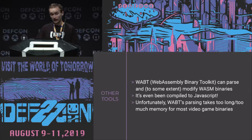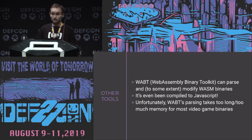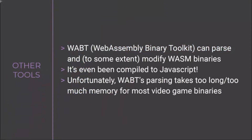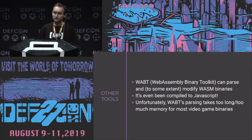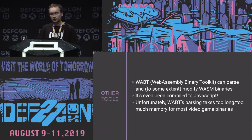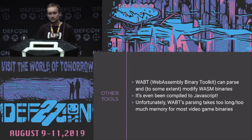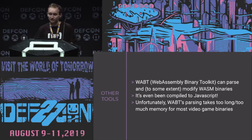The next tool is the WebAssembly Binary Toolkit, or WABT. It's a library specifically for modifying and parsing WebAssembly binaries, and there's even a version compiled to JavaScript, so it seemed like a perfect starting point. The problem is that when you try to use WABT to parse a video game binary, it takes way too long and too much memory. I tried this with a demo Unity 3D binary — basically just hello world of Unity — and WABT would spin its wheels for 10 or 15 seconds and then crash with an out-of-memory error. So it was already taking too long even if it had worked.